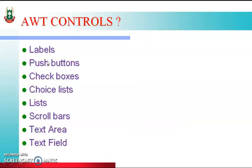Dear students, the AWT controls we had seen are: label, pushbutton, checkbox, choice list, list, scrollbar, textarea, and textfield. Among these, labels, pushbutton, textarea, and textfield we had seen in the previous video. In this video, we have to concentrate on checkbox, choice list, list, and scrollbar control of the AWT.